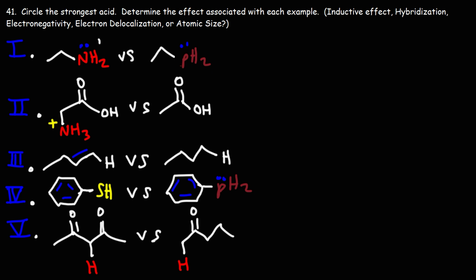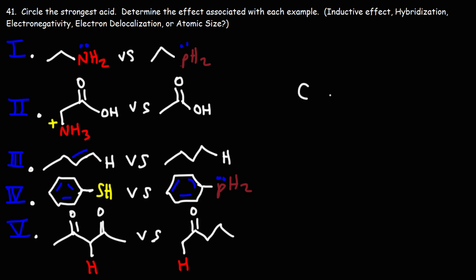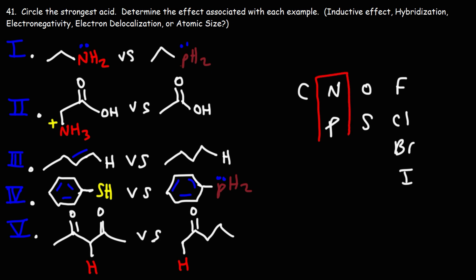For the first example, we're comparing NH2 with PH2. On a periodic table, below nitrogen is phosphorus, below oxygen is sulfur, and here are the halogens. So in this example, we're comparing nitrogen and phosphorus. When we're looking at two elements in the same column, we're looking at either electronegativity or atomic size.